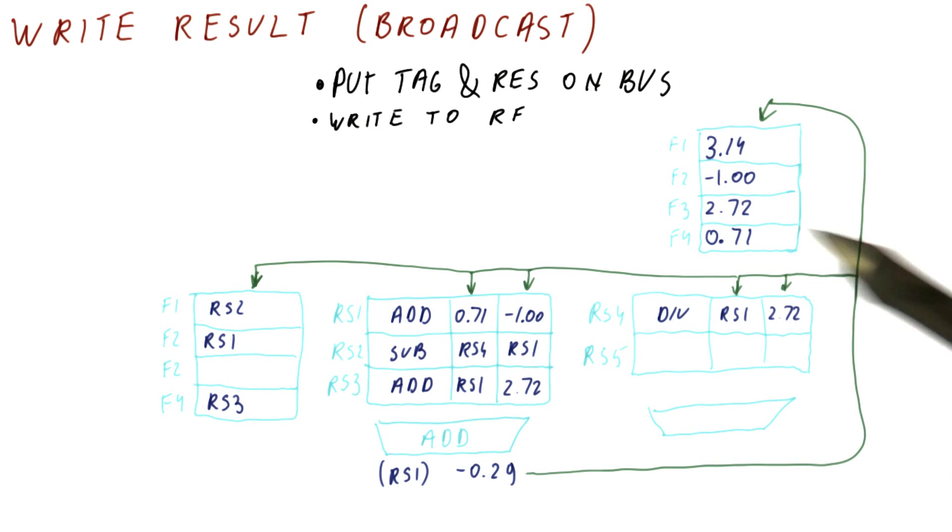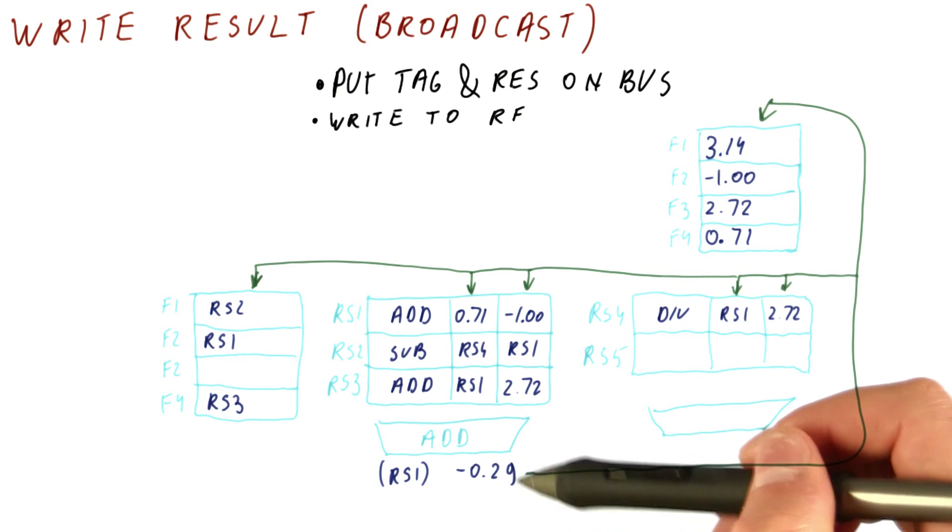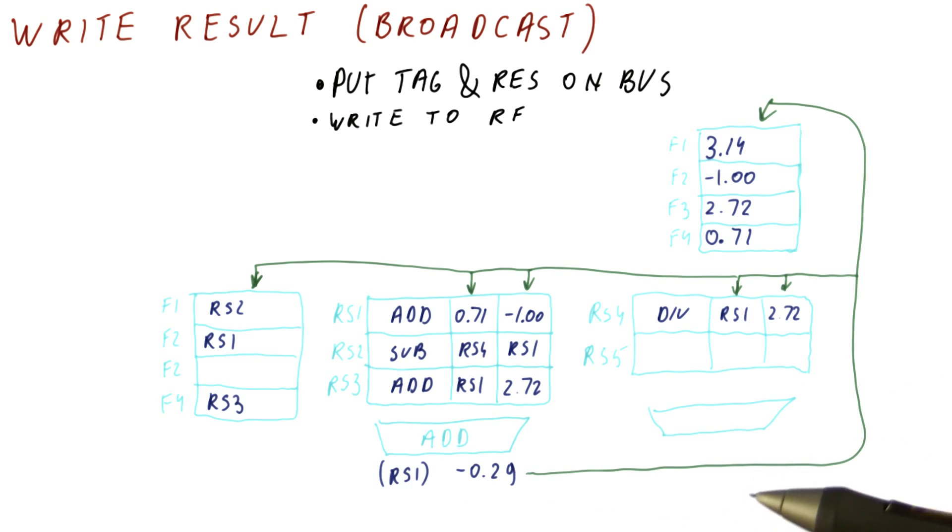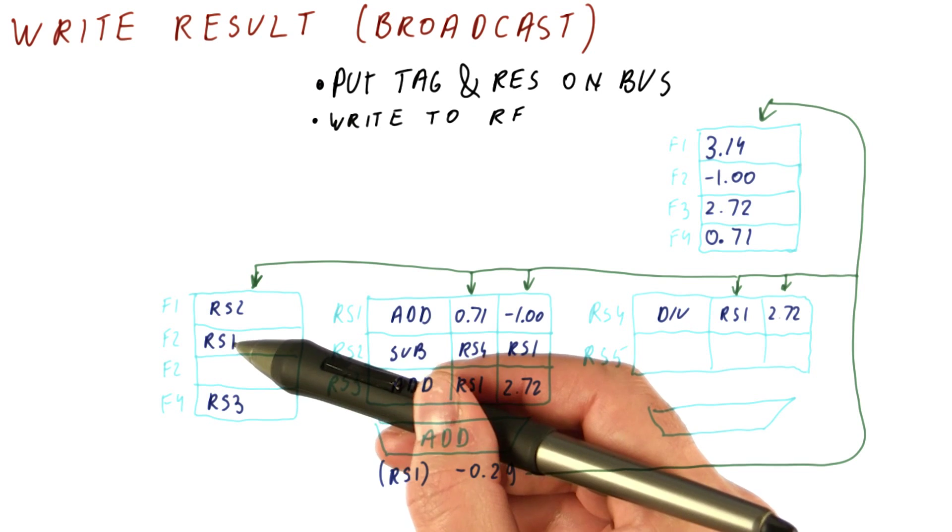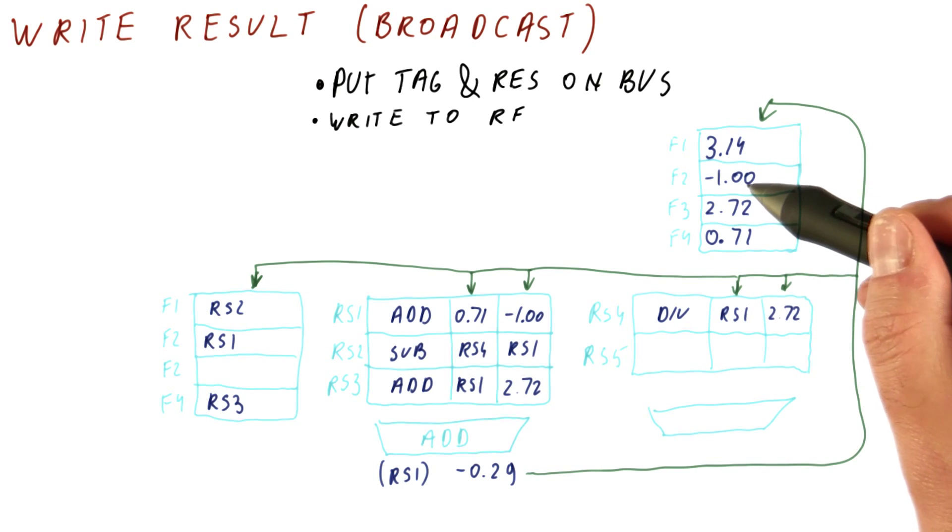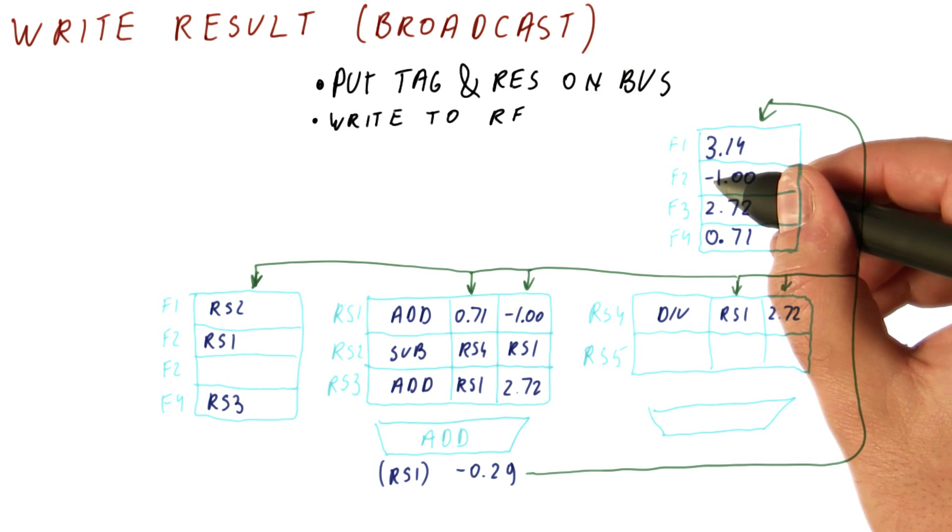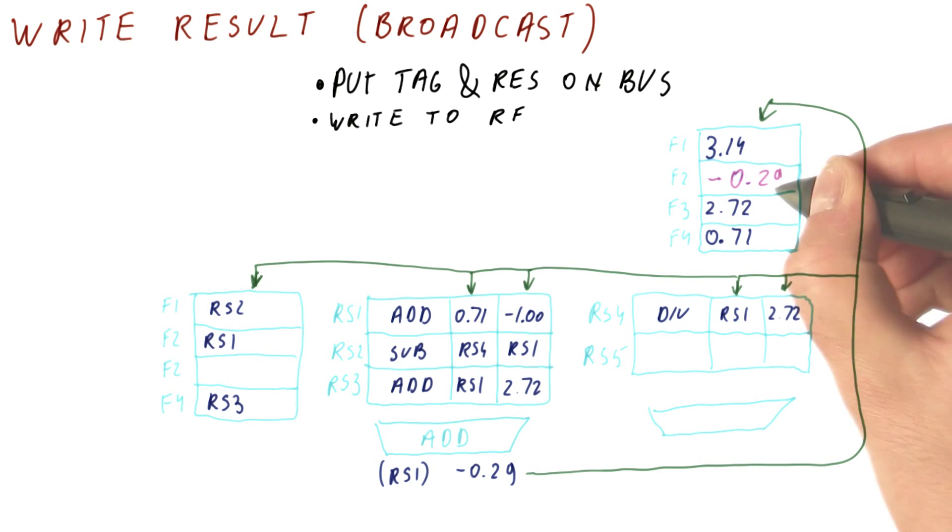Now what we want to do is write to the register file. This is a new value for whichever register this add is supposed to be writing to. We don't have to carry that this is going to register F2 because reservation station one matches F2, so we know the value is going to F2. We're going to override the value in F2 with that. The first step is to override the value in the register file, so we have changed F2 now.